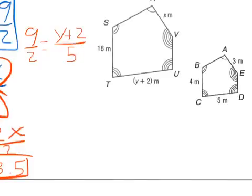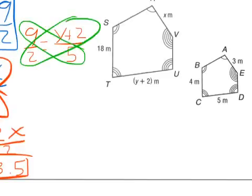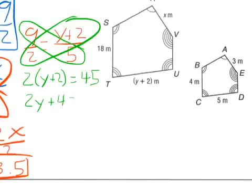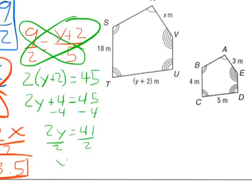Take the cross product. I get 2 times Y plus 2 equals 9 times 5, which is 45. Distribute that 2. Subtract 4. Subtract 4. 2Y equals 41. Divide by 2. Divide by 2. And I get Y equals 20.5.